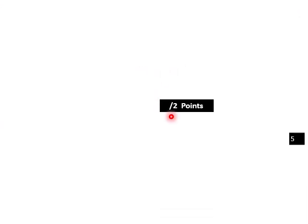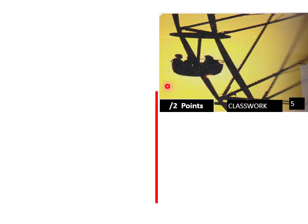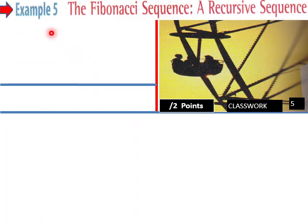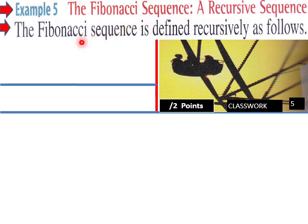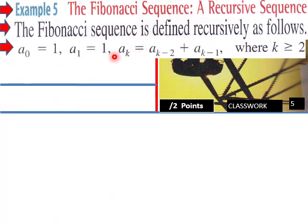Back to example number five: the Fibonacci sequence. The Fibonacci sequence is defined recursively as follows: a₀ = 0, a₁ = 1, and aₖ = aₖ₋₂ + aₖ₋₁, where k must be greater than or equal to 2.